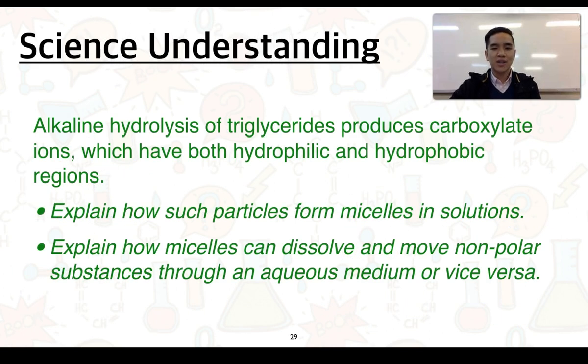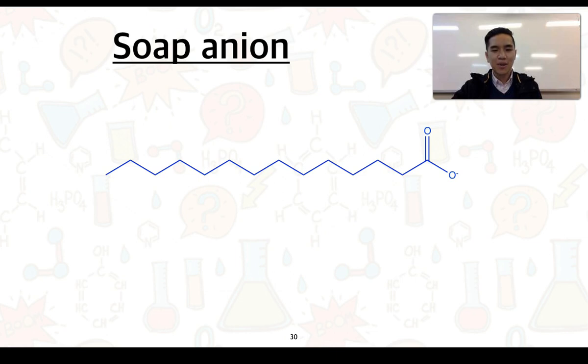Alkaline hydrolysis of triglycerides produces carboxylate ions, which have both hydrophilic and hydrophobic regions. You'll need to be able to explain how such particles form micelles and solutions, and explain how micelles can dissolve and move non-polar substances through an aqueous medium, or vice versa. So by taking this carboxylate ion, or what we can think of as a soap anion, we can see that there are two major components.